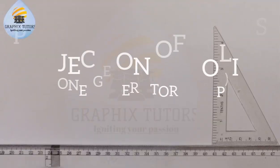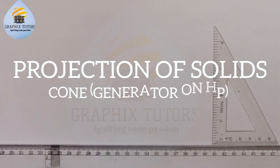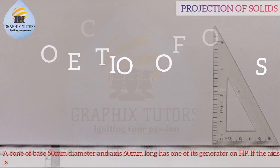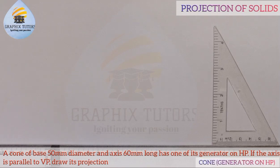Good everyone, my name is Graphics. In today's video we'll be looking at projection of solids. We'll be treating a problem involving a cone — specifically looking at the generator of the cone on the horizontal plane. The question says: a cone of base 50 millimeter diameter and axis 60 millimeter long has one of its generators on the HP (horizontal plane), and the axis is parallel to the VP (vertical plane). Draw each projection.